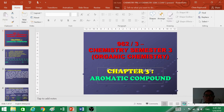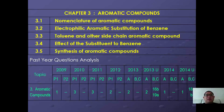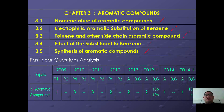Hello, good morning. We're going to continue with a brand new chapter where we'll learn about aromatic compounds. In this chapter we're going to learn nomenclature of aromatic compounds, electrophilic aromatic substitution in benzene, free radical and aliphatic chain reactions, effect of substituents on the benzene ring, and synthesis of aromatic compounds. Based on past year exam analysis, aromatic compounds have received much attention, so you should focus on how to synthesize these topics.